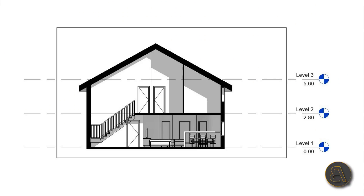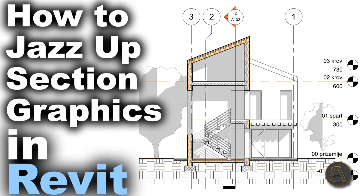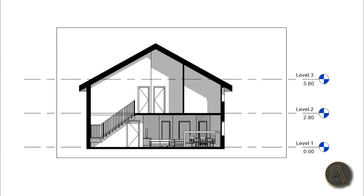What's going on guys, BalkanArchitect here. In today's tutorial I'm going to be showing you how to create a section in Revit. This is a beginner-style tutorial where I'll show you not only how to use the section tool but also what model elements you need to add to have a section that actually looks right. If you want something more advanced — how to jazz up a section so it looks really cool — check the link in the description.